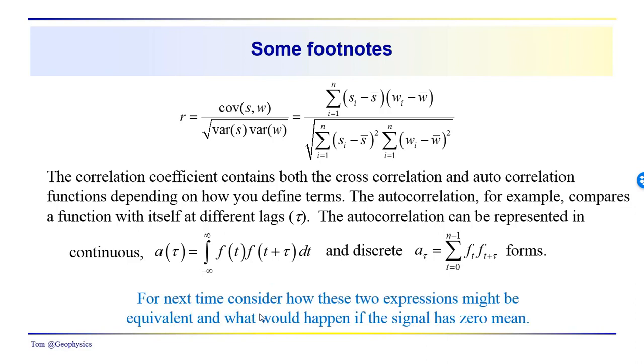So what I'd like you to do is just think about for the next time is consider how these two expressions might be equivalent. And that's what I'm talking about here is how could the correlation coefficient and the autocorrelation be equivalent, or the cross correlation. We haven't talked about the cross correlation yet, but that's really the question I'm asking is how could the cross correlation at a certain lag be equivalent to this. And what would happen if the, well, let's just say if I calculated the correlation coefficient of F with its lagged image, think about how these two expressions would be similar. That's the better question to ask. And also consider what would happen if the signal has zero mean.